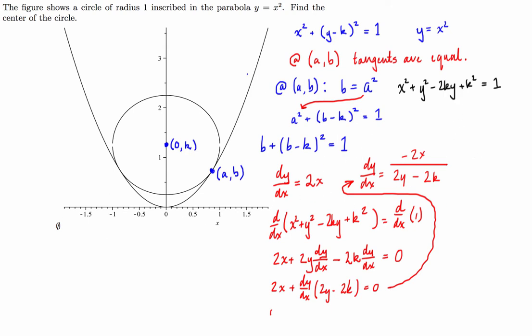And so from here, guys, what we can do is, I'm just going to change color. Now because these are equal, we can go 2x is equal to negative 2x on 2y minus 2k. So what we can do is we can substitute in. We know at a, b, this is happening. So we can just go, well, this is going to be 2a equals negative 2a all over 2b minus 2k.